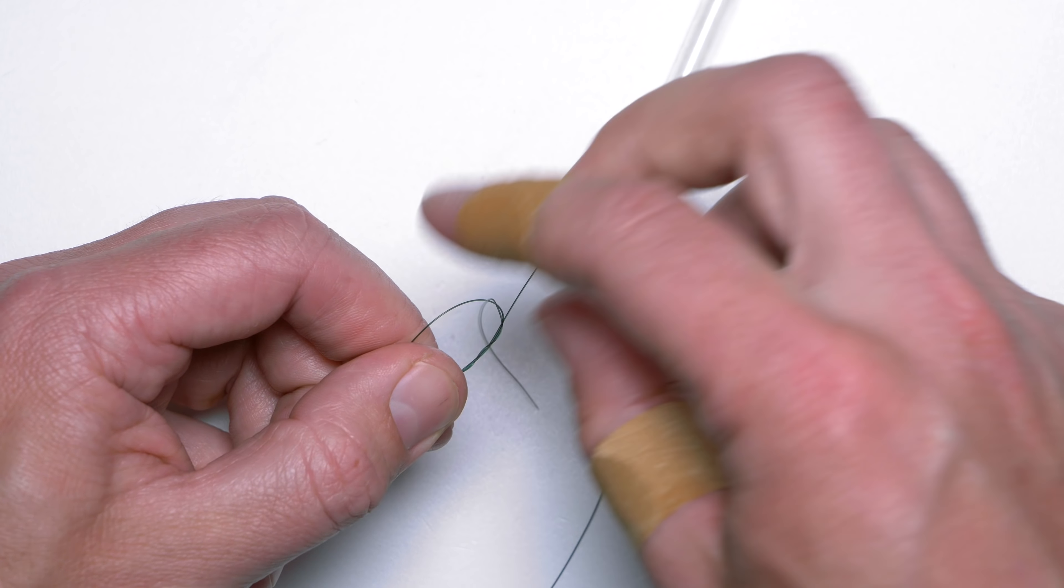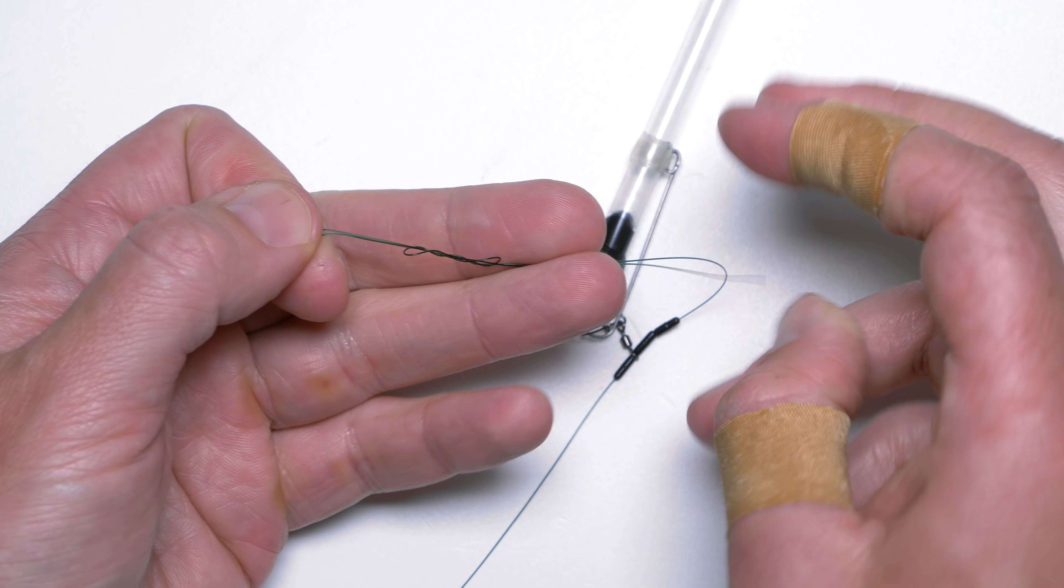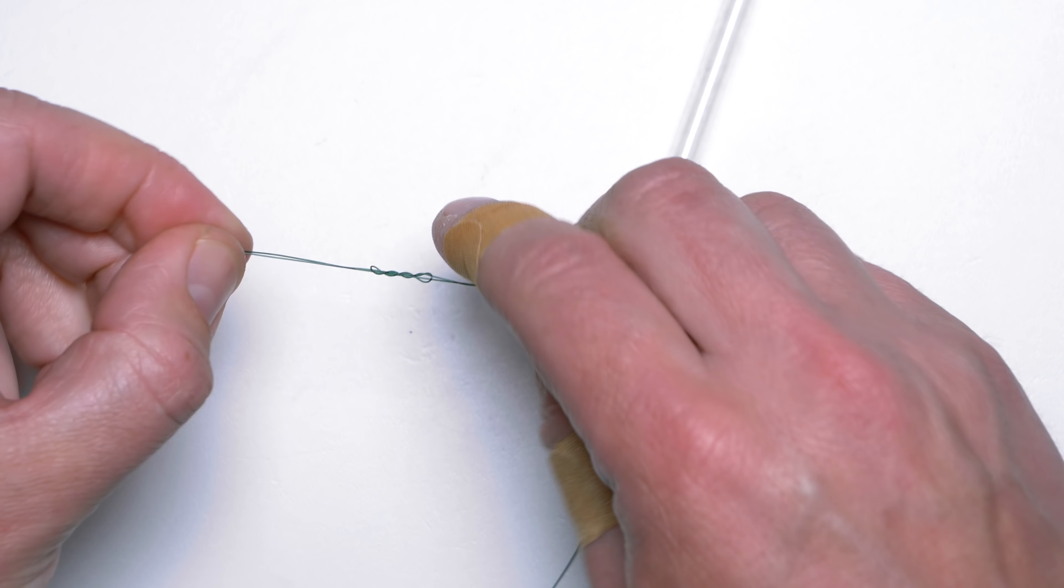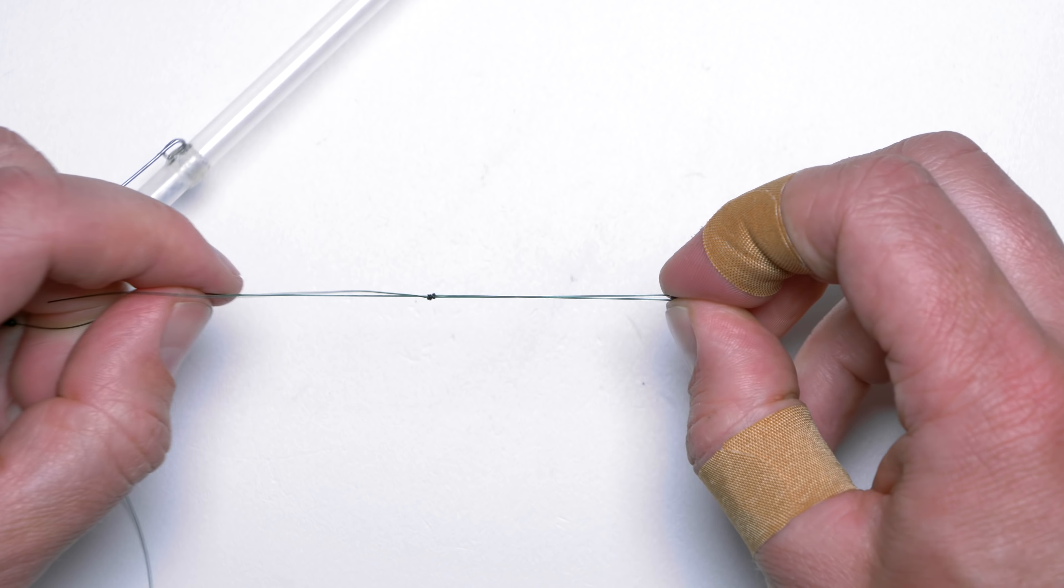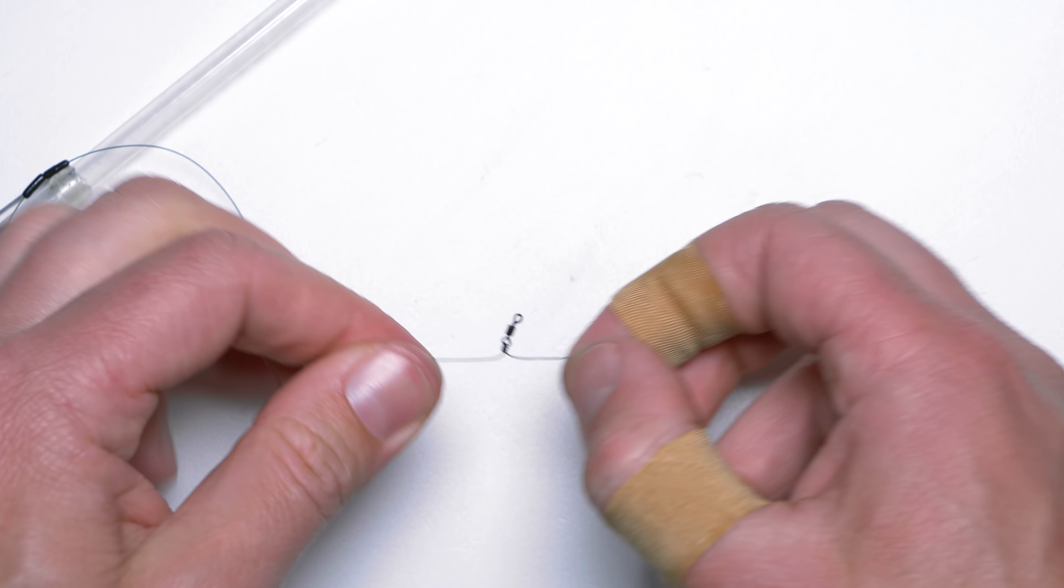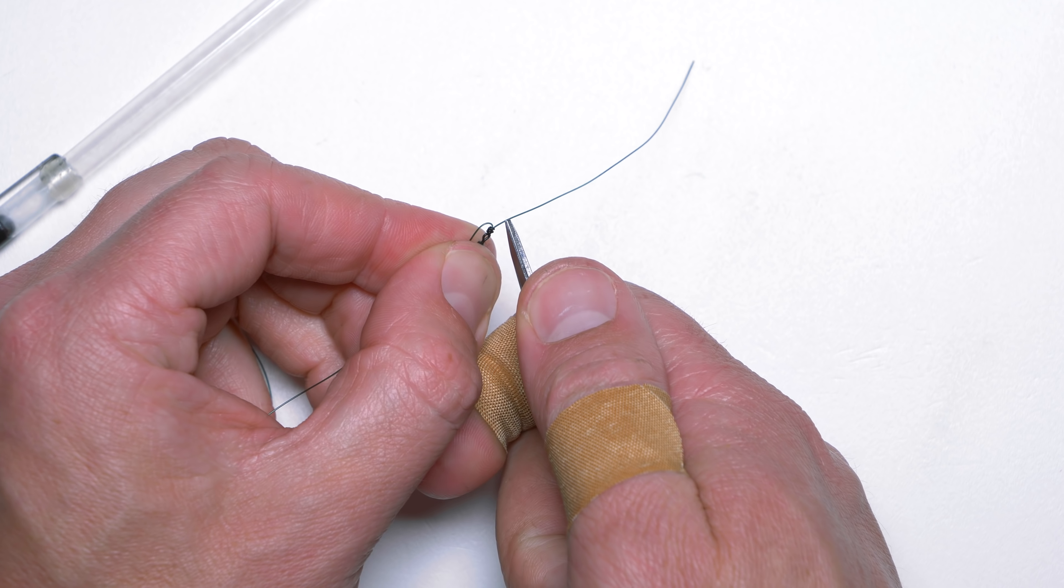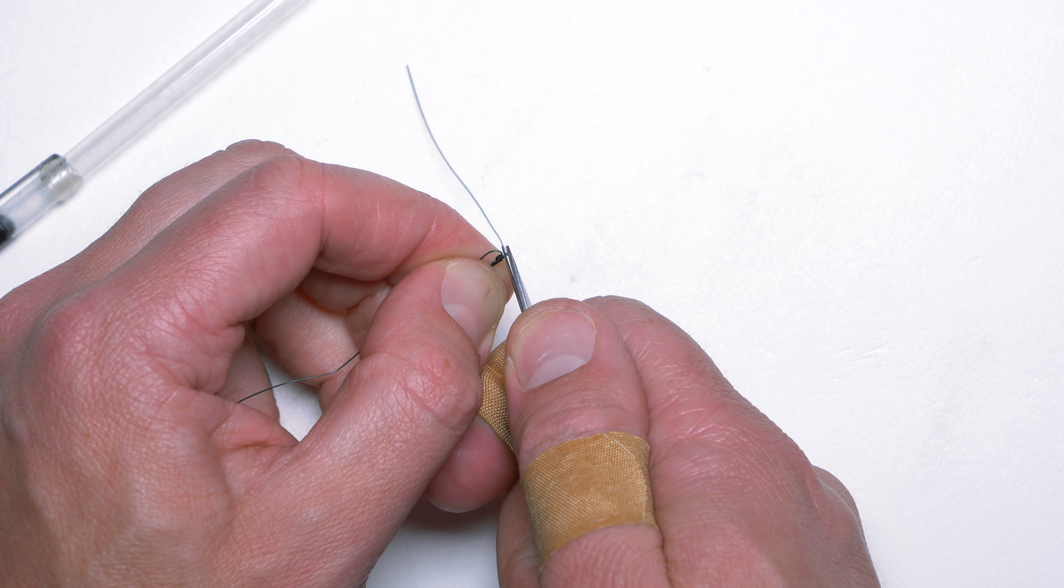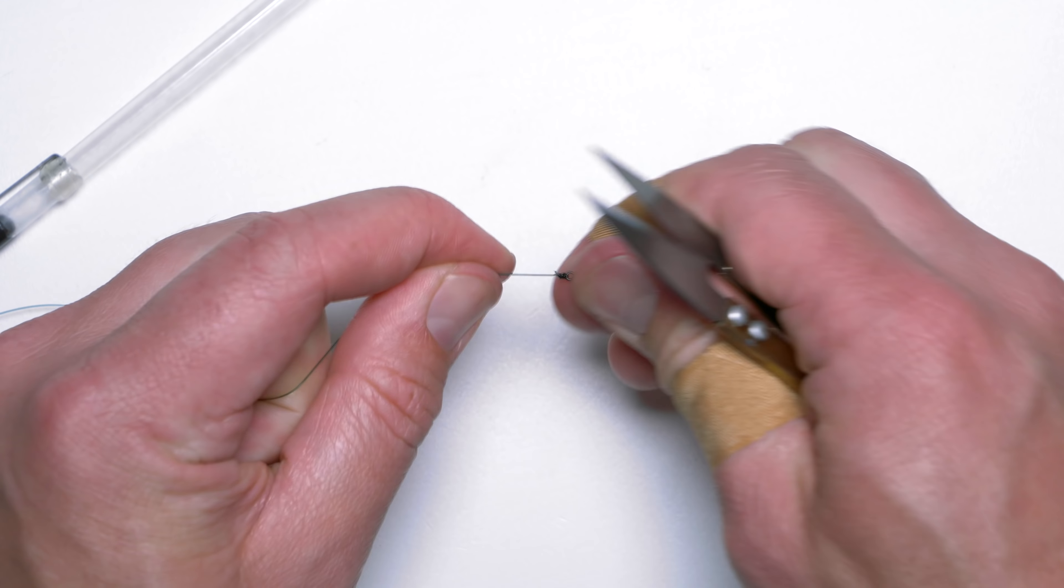Four turns will be enough in this case. When tying your own knot don't forget to wet it as always before pulling it tight. Now I will trim off the tag end leaving very short end by the knot.